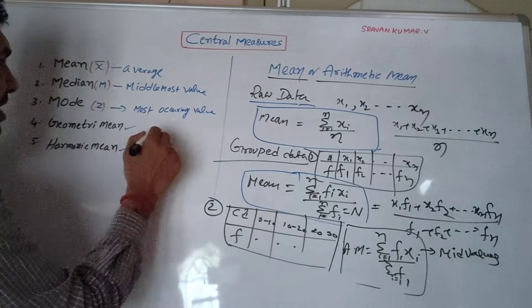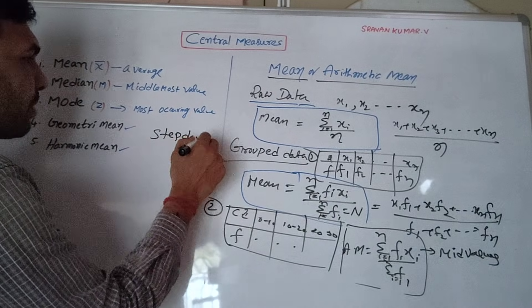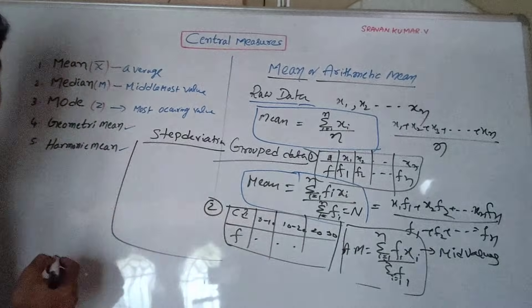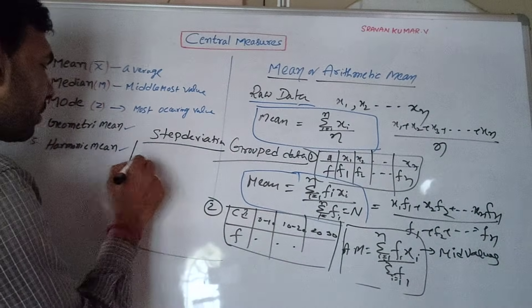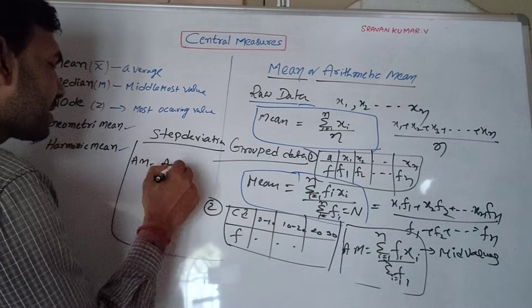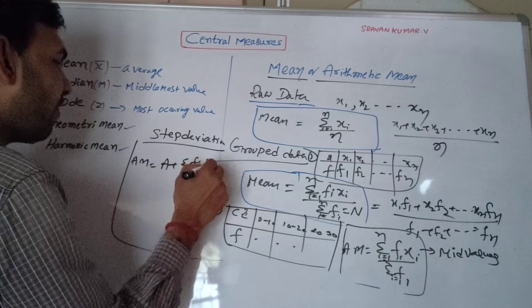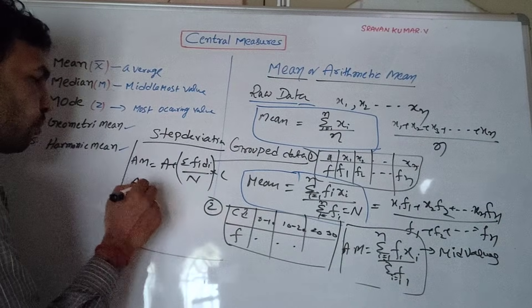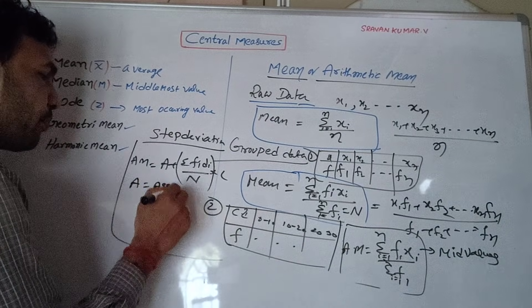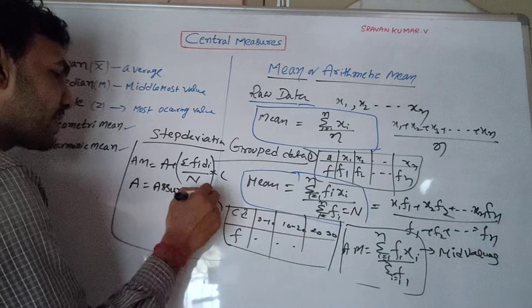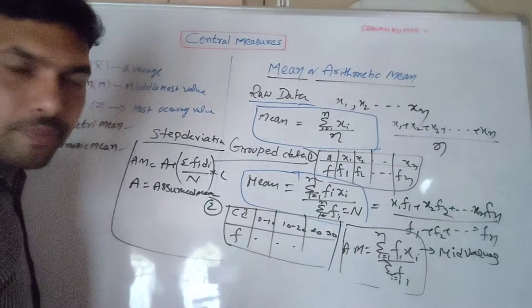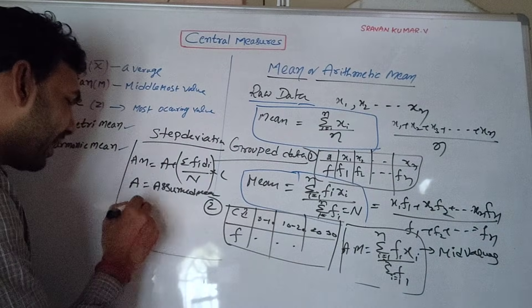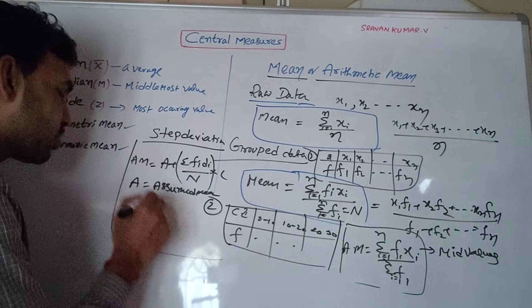The second formula is the step deviation method, also called the shortcut method. The formula for arithmetic mean using this method is: A plus sigma f·di divided by N, into c. Here, c is the class interval width, A is the assumed mean, and di is the deviation from the assumed mean, calculated as xi minus A divided by c.